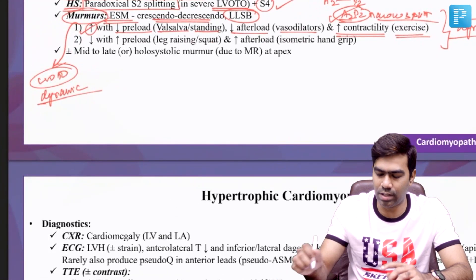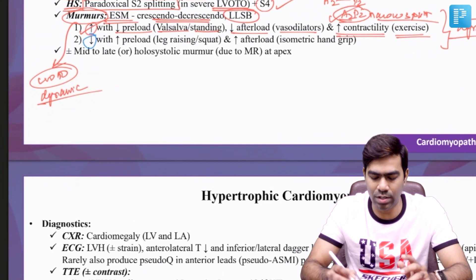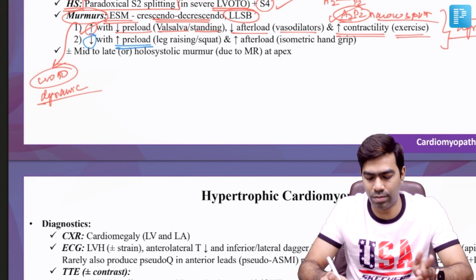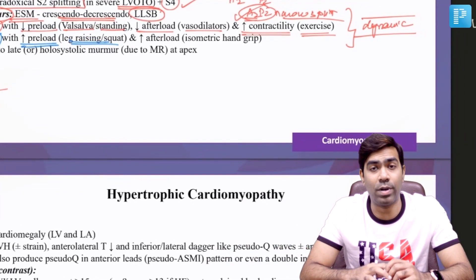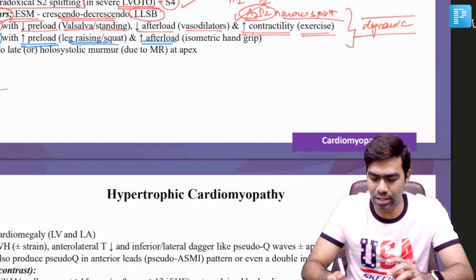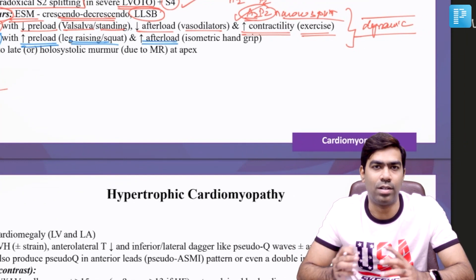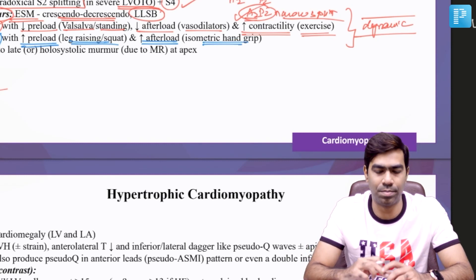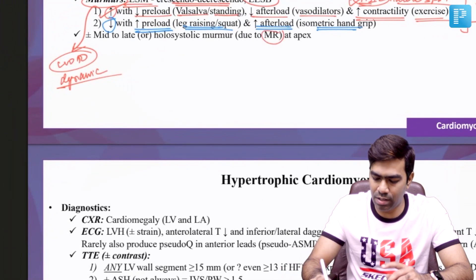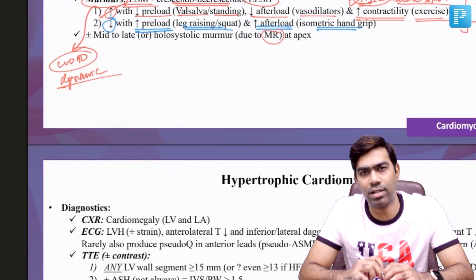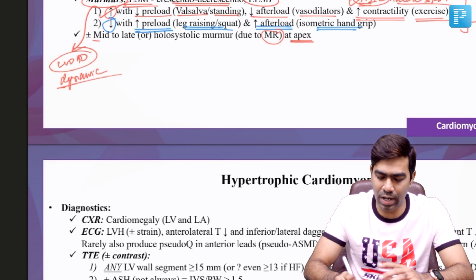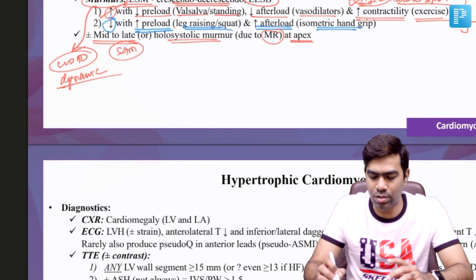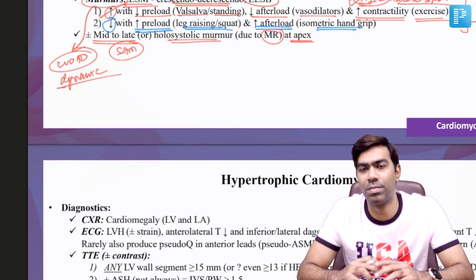Conditions that reduce the murmur are those that reduce LVOT obstruction and gradient, such as increasing preload — achieved by leg raising and squatting — and conditions that increase afterload, like isometric handgrip. Remember, MR in patients with HCM can also produce a systolic murmur at the apex. It could be a mid to late systolic murmur if due to SAM, or a holosystolic murmur if the leaflet or papillary muscle is involved.